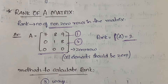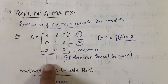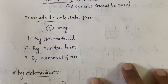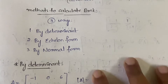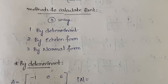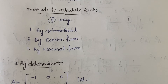This is how you calculate the rank if the matrix is given directly in row-echelon form. But in some cases the matrix won't be given like that. So we actually have three ways to calculate the rank: first by determinant, second by echelon form, and third by normal form. Usually in your semester exams you have to follow echelon form and normal form only — you cannot go with the determinant method.